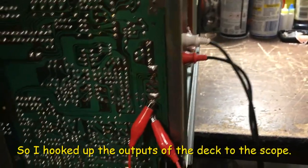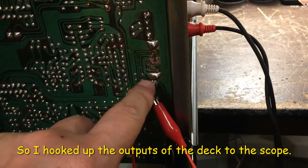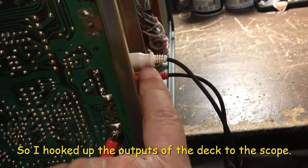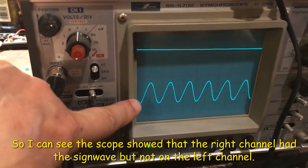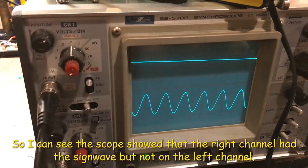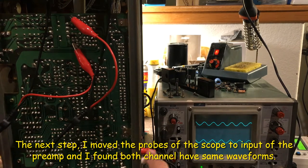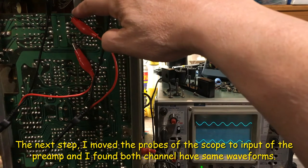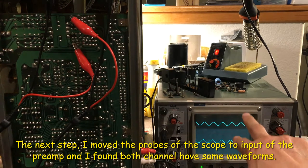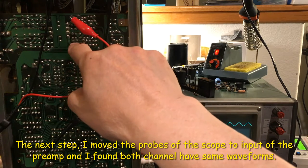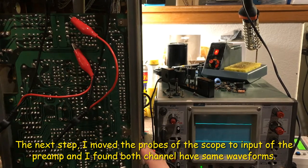I hooked up the scope to the input right here. The left channel has signal wave but not the right channel. I hooked up this scope to the front of the preamp right here. So if both sides have the same waveform, that means from here to the input is okay.